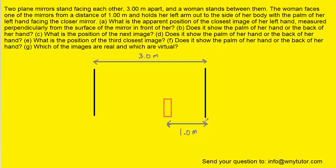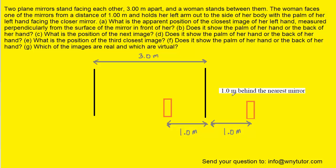When an object is placed in front of a flat, plain mirror, its image will be located a distance behind the mirror that is equal to the distance from the mirror to the object. In other words, the first image of her left hand will be located one meter behind this nearest mirror. And so the correct answer to part A is indeed one meter behind the nearest mirror.